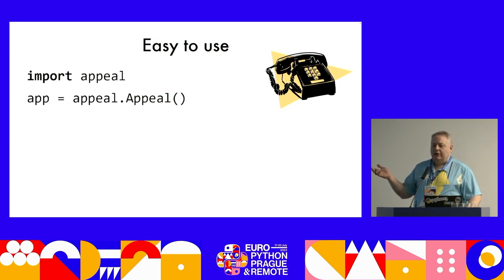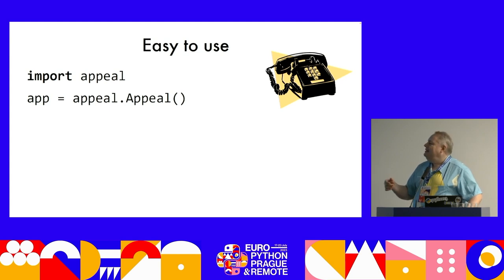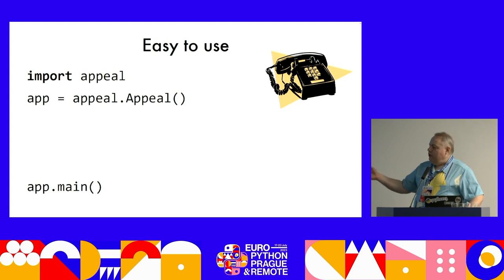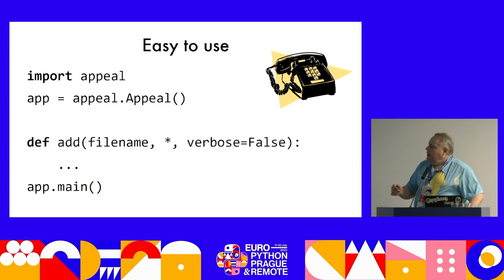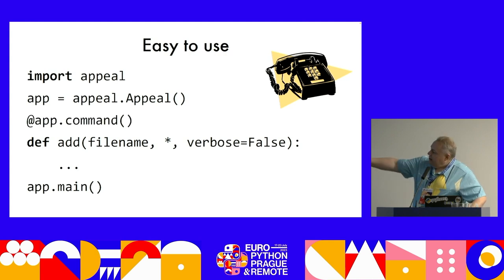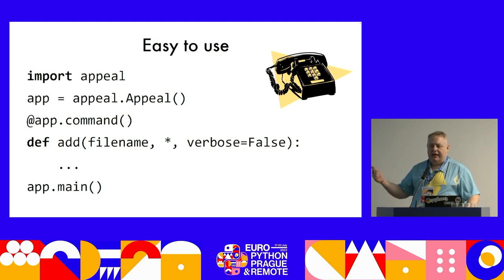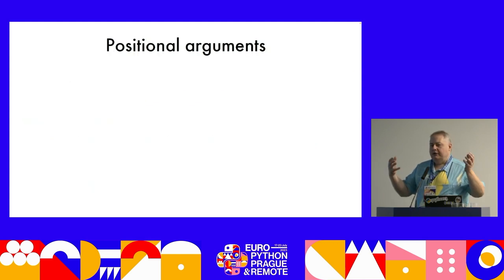Appeal doesn't have much API because you express yourself using Python — a language you're already familiar with. You just write a Python function, and Appeal infers the command line from that. All you do is import it, create your Appeal object (by convention called 'app'), decorate your function with app.command, and call app.main at the bottom. This is already a working command line program with help and usage.